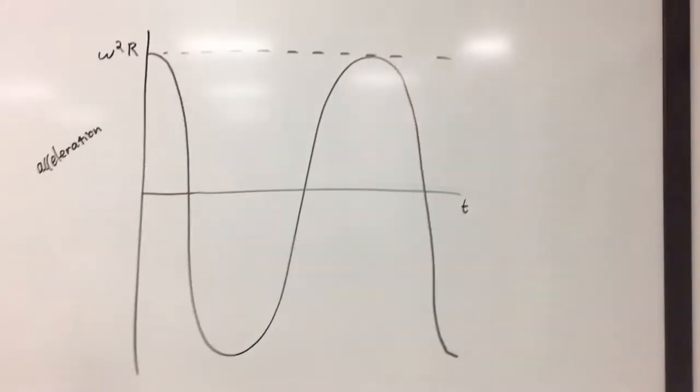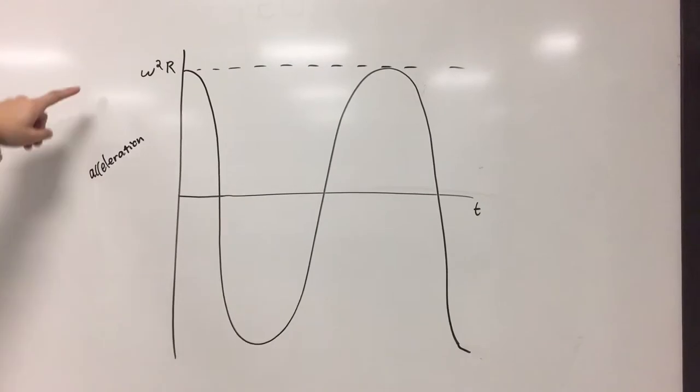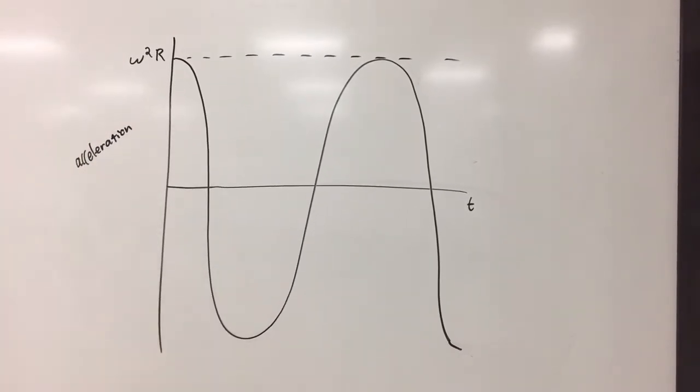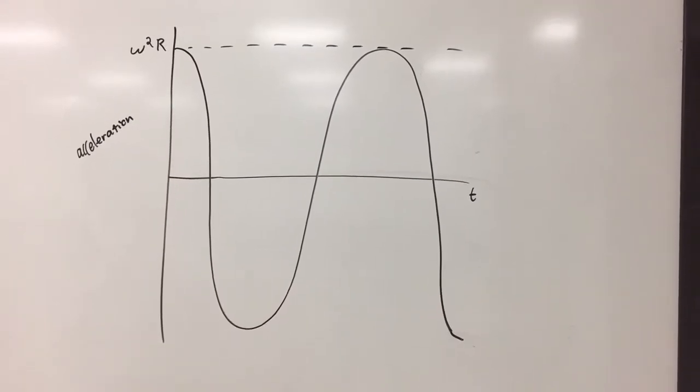Looking at the acceleration versus time graph, the omega squared r is at the peaks and the valleys, and so we set that equal to G.